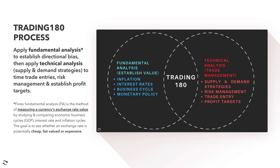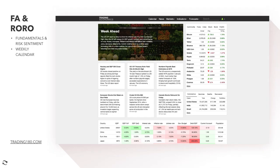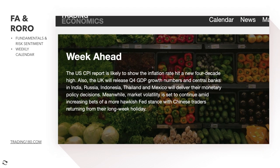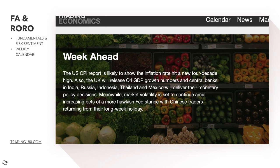Let's get into the upcoming news events for this week — quite a lot going on. The US CPI report is likely to show the inflation rate will hit a new four-decade high. Money in your pocket is being devalued right now. The UK will also release fourth-quarter GDP growth numbers, which is going to be important.